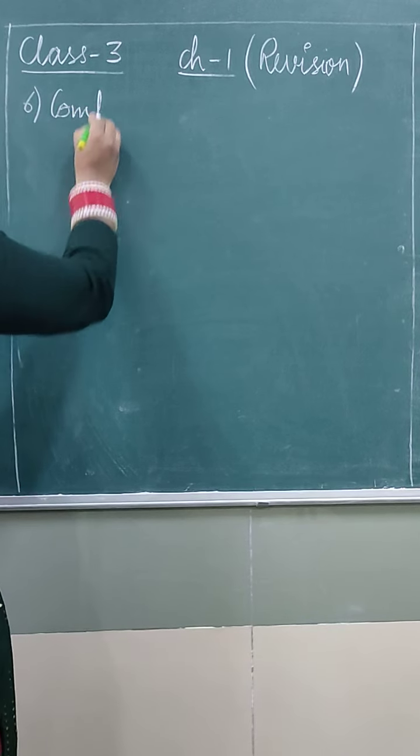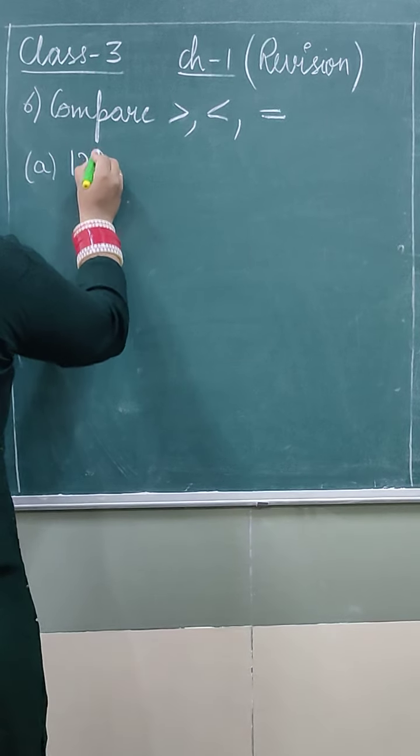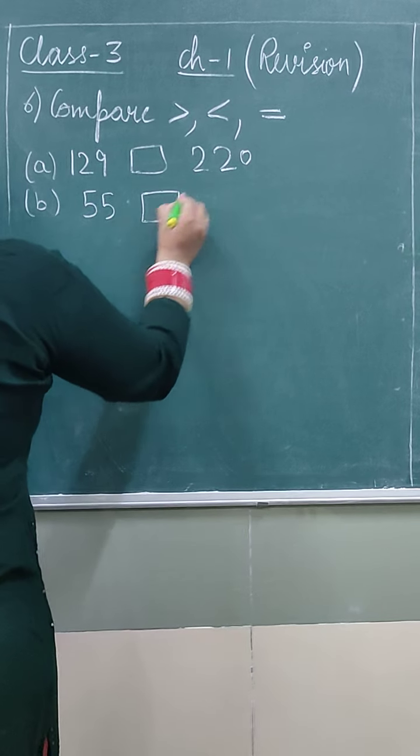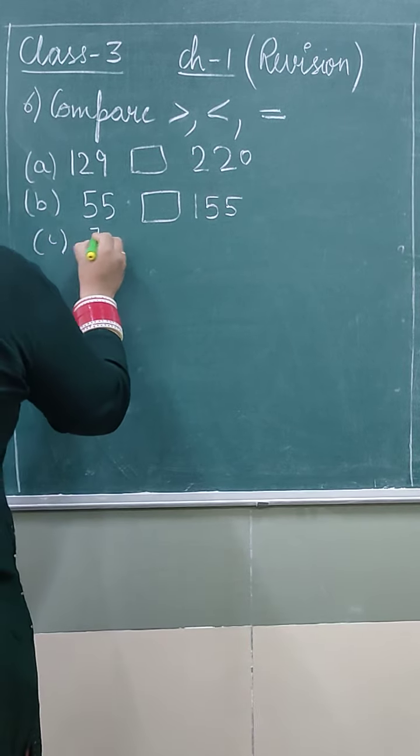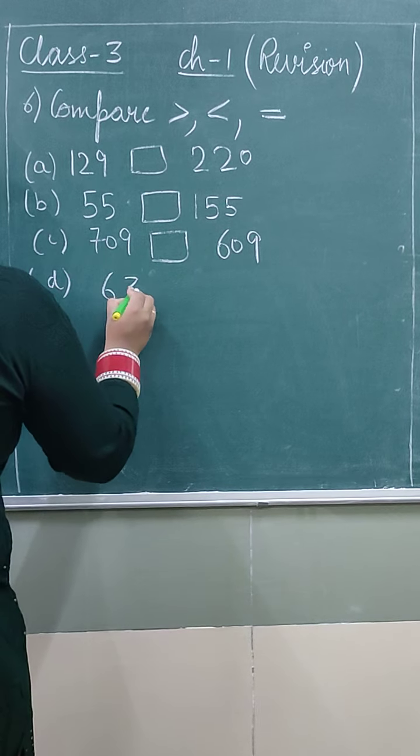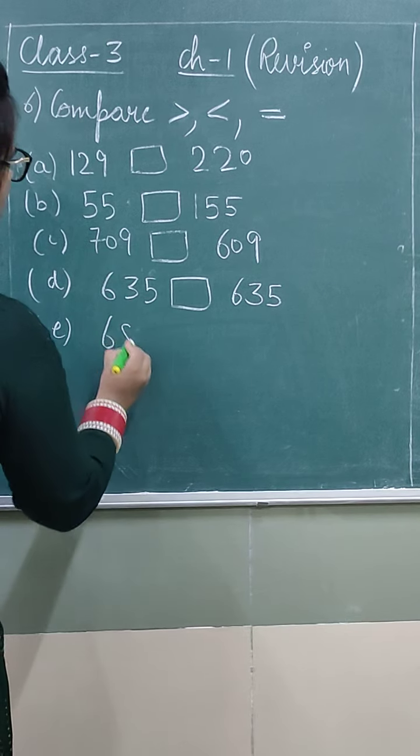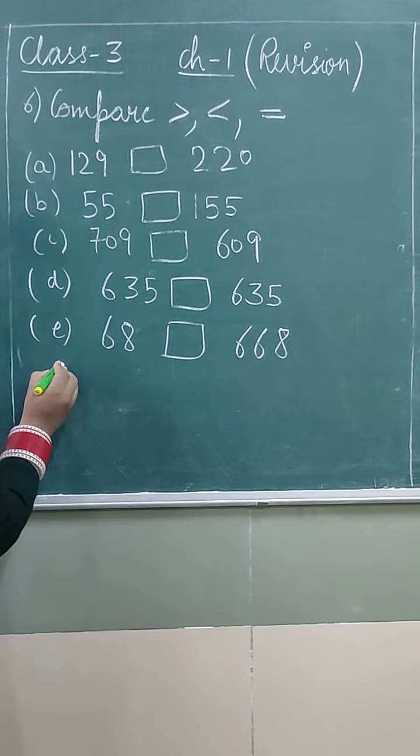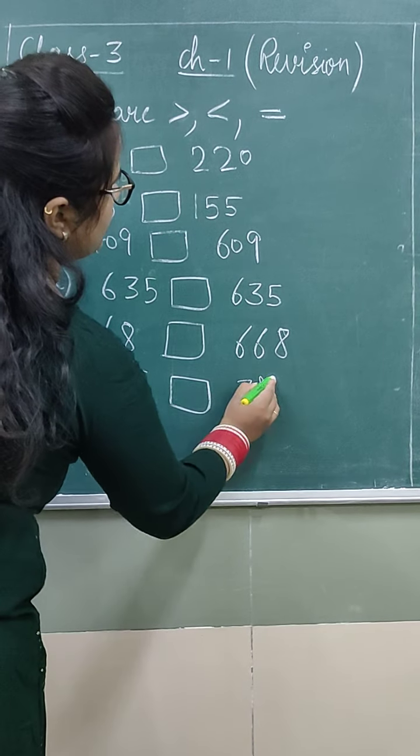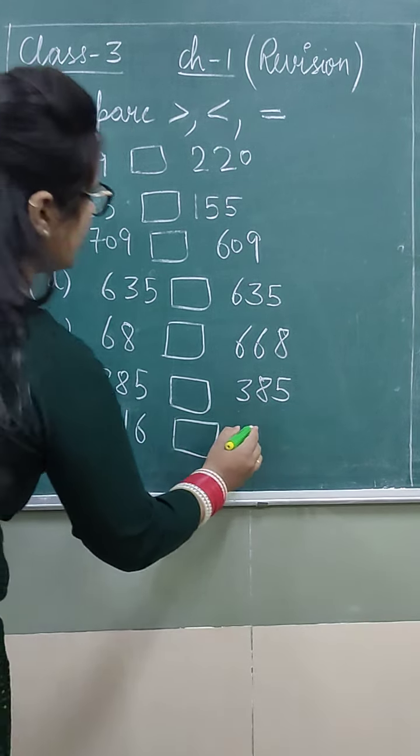We have to compare, greater than, less than, or equals to sign. So in A part we have 129, here we have 220. In B part we have 55, here we have 155. In C part we have 709, here we have 609. In D part we have 635, here we have 635 also. In E part we have 68, here we have 668. In F part we have 285, here we have 385. In G part we have 816, here we have 816.